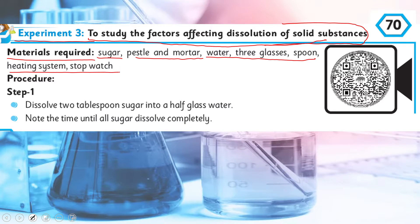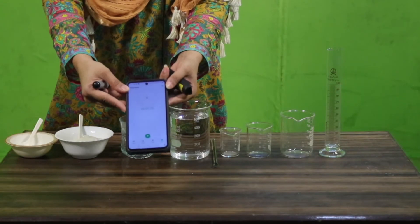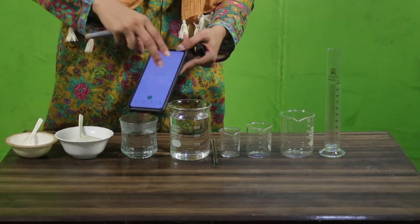I have regular sugar, and I have also converted sugar into smaller particles — powdered sugar. I also have water, three glasses, a spoon, and for the heating system I have heated the water already. The stopwatch is on my mobile. I will open the stopwatch, set it to zero, and as we slowly go through the procedure, I will switch it on and record the time.